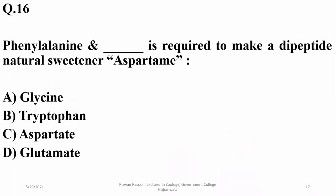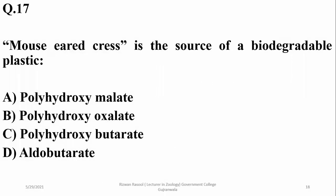Phenylalanine and aspartate are required to make the dipeptide artificial sweetener aspartame, so Charlie. Mouse-ear cress is the source of a biodegradable plastic, and that plastic is polyhydroxybutyrate.